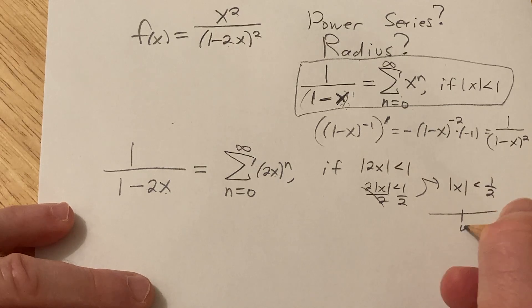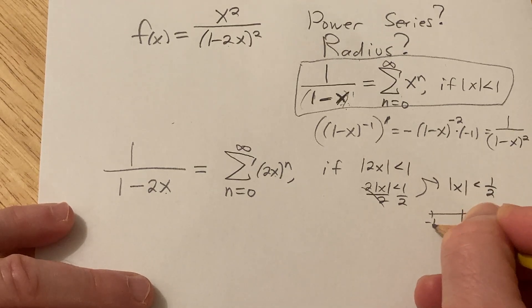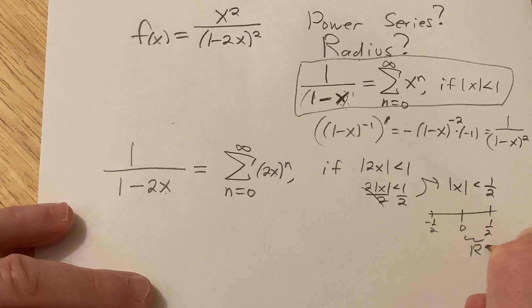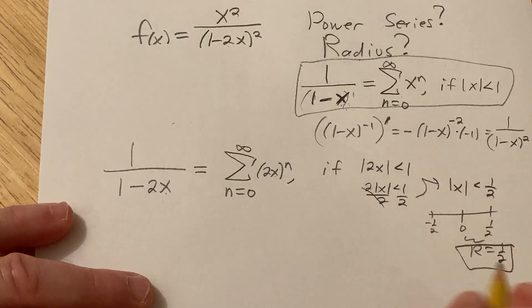And if you draw a little picture, here's 0, here's 1 half, here's negative 1 half. And so r is equal to 1 half. Okay, so that's going to be our radius. That part's really easy.